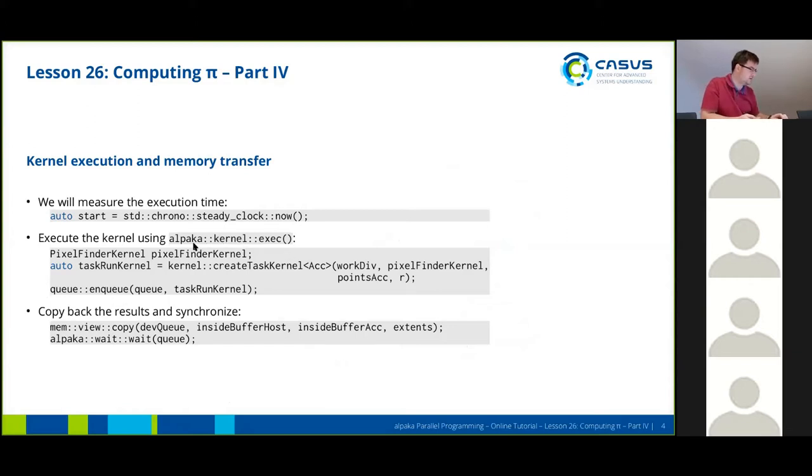I've seen there's a small error here. We're going to execute the kernel not using the kernel exec function but using the Q and Q function. We first have to instantiate our kernel on the host side by creating this dummy variable here and then we're going to create a task.